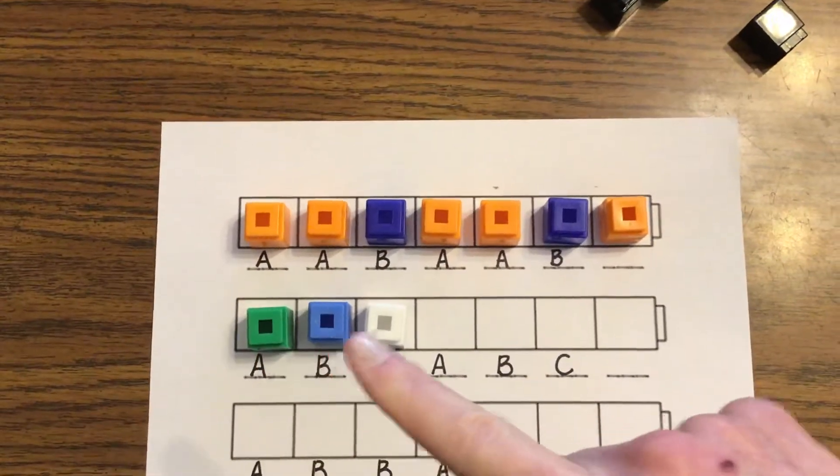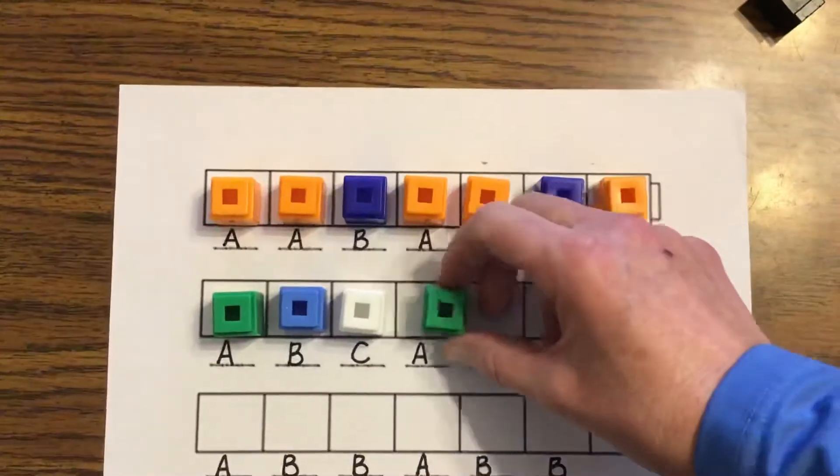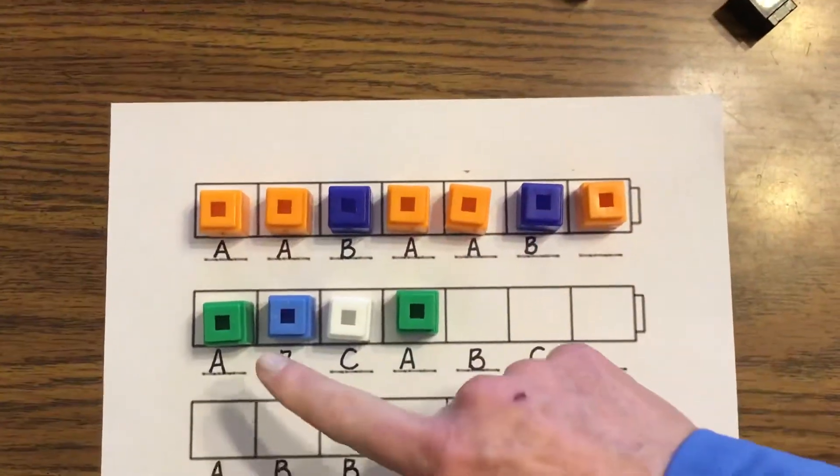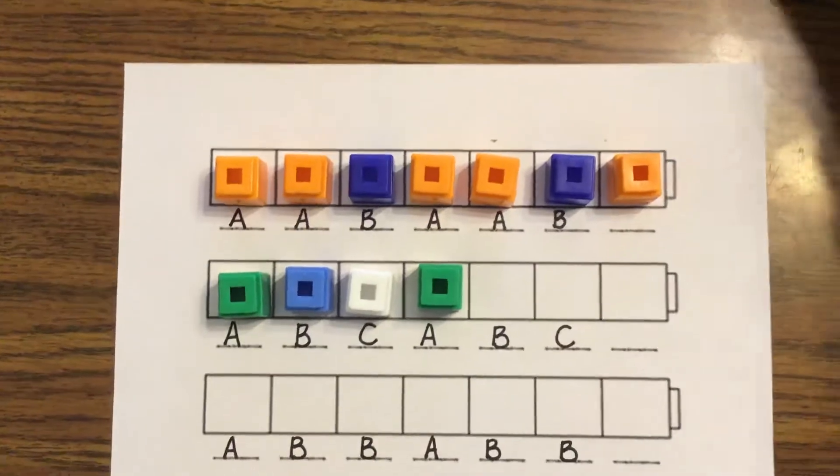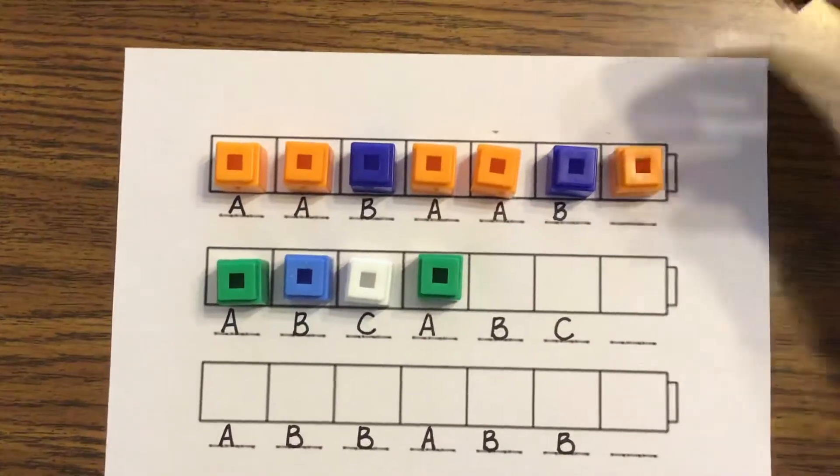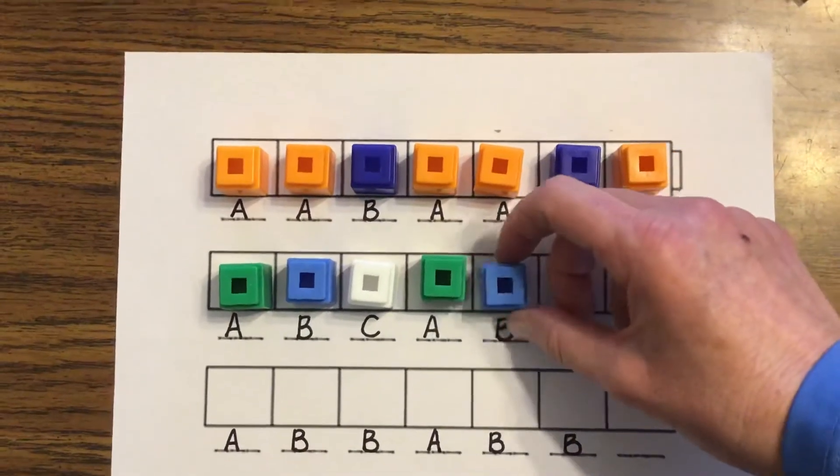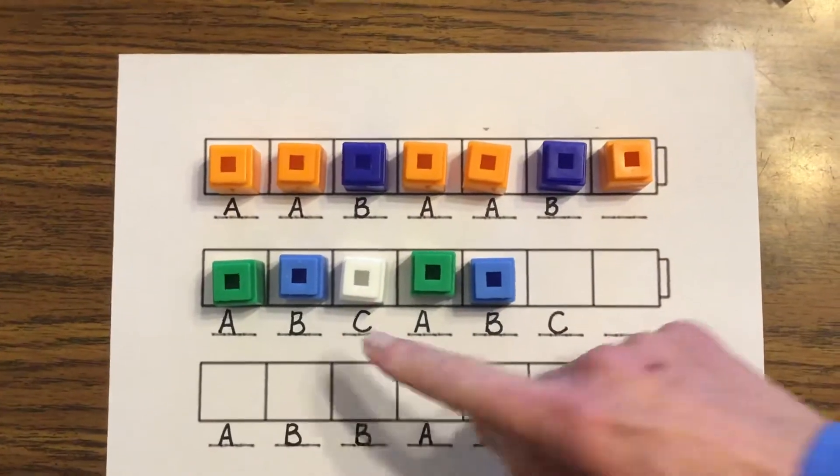Green, blue, white. Green. What's the B? Blue. And what's the C? White.